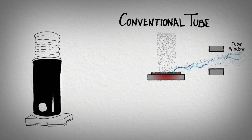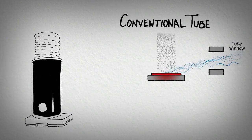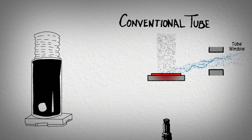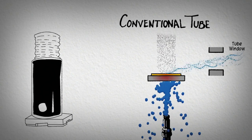In the traditional tube, the large footprint of the wide electron beam limits the heat dissipation, requiring the anode to be water-cooled.